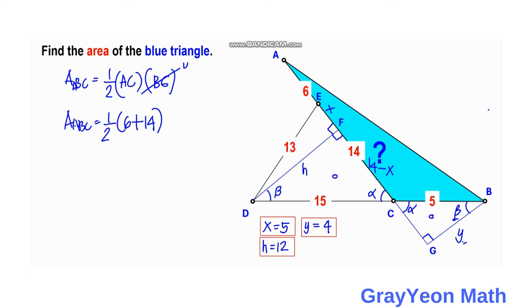This is equal to one-half times AC, which is 6 plus 14, and BG is equal to Y. But Y is actually 4, as we got earlier. So 4 divided by 2 is 2. This becomes 20. So we just multiply: 20 times 2 gives us area of triangle ABC is equal to 40 square units. And that is our answer.